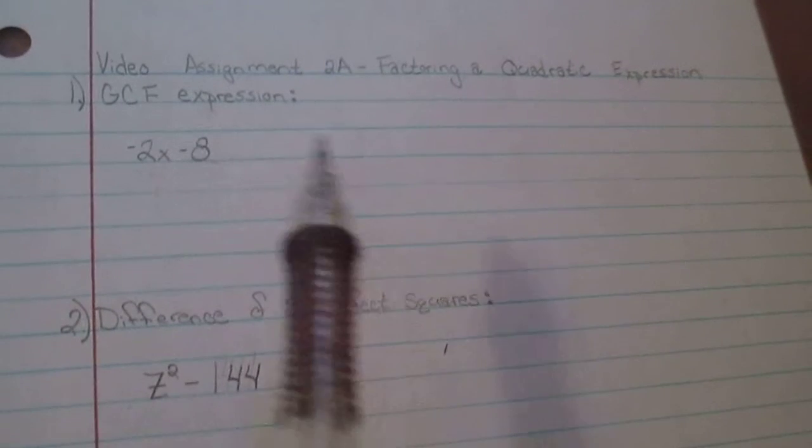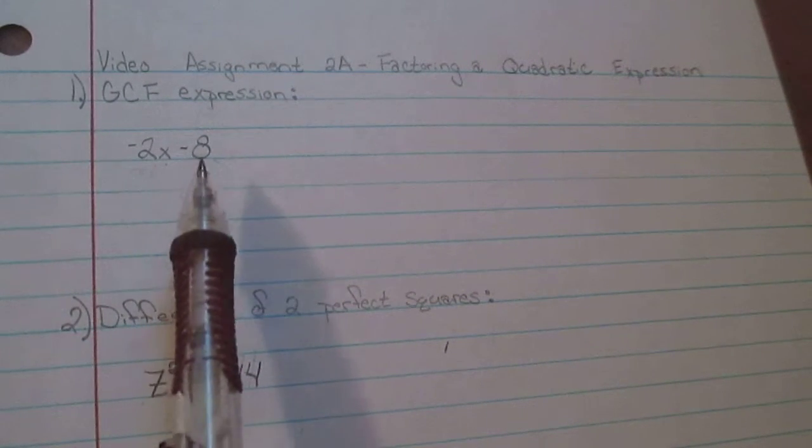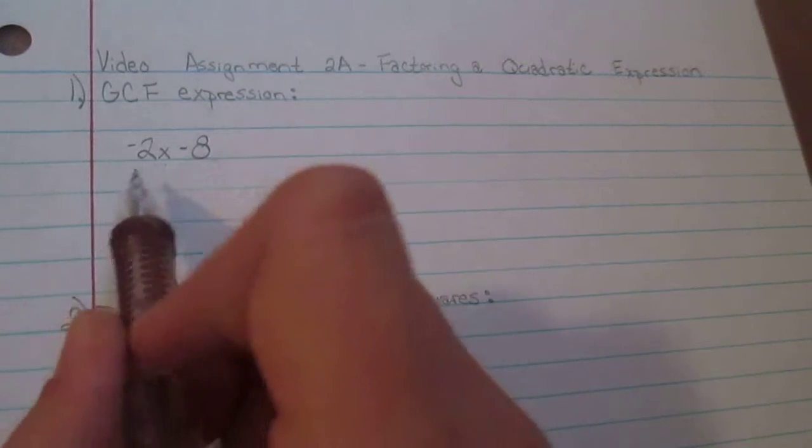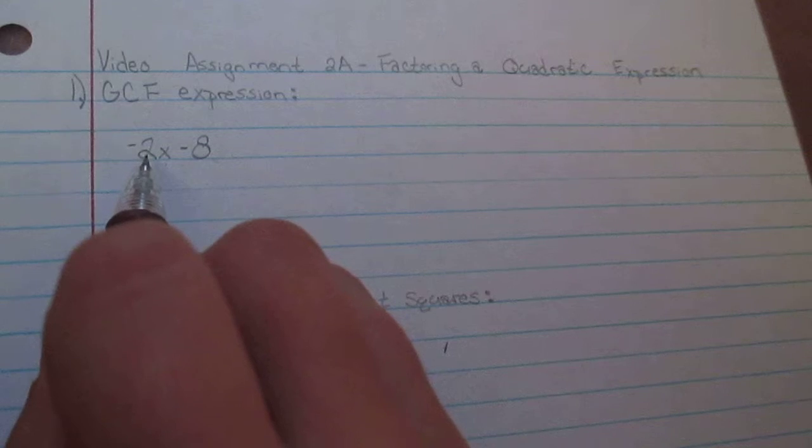So for my first expression I have -2x - 8 and to factor the GCF you're going to find the greatest common factor of each term and you're going to put that outside the parenthesis. So the greatest common factor in this expression would be -2.